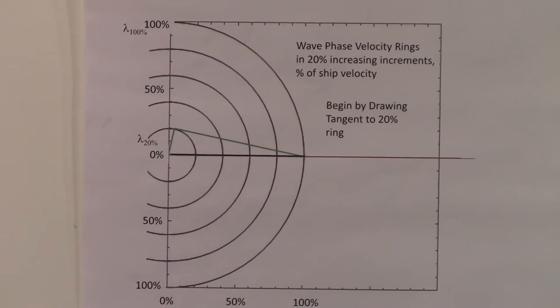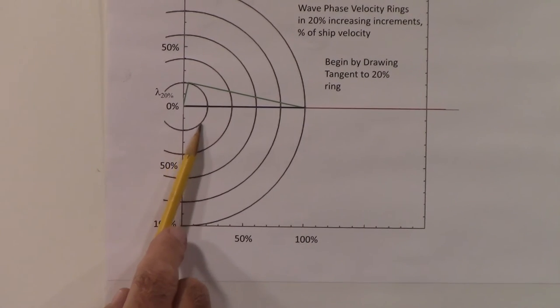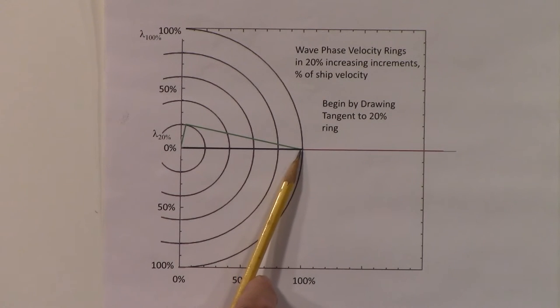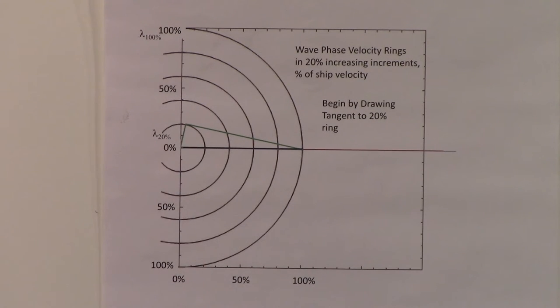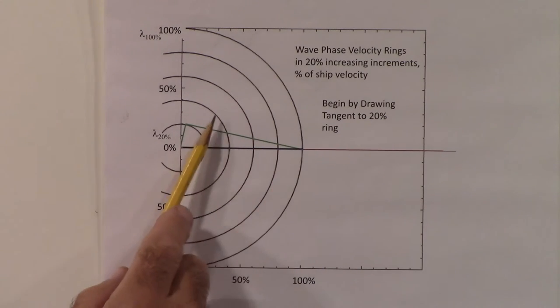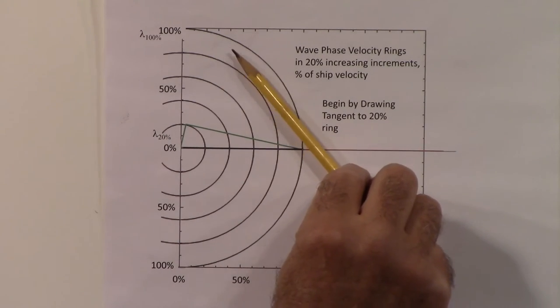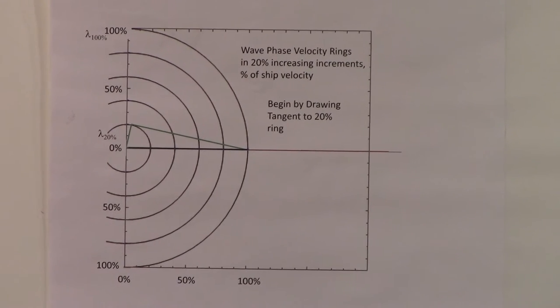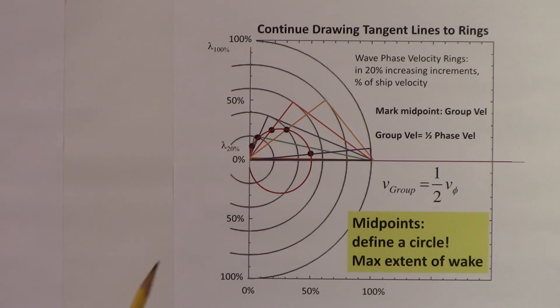What we're looking at here now is the 20% case. What I've done is I've drawn a line from where the ship is currently that's tangent to that ring. I can do that for all the other rings too. For example, for this one here, it would look something like that.